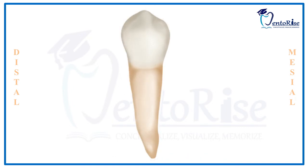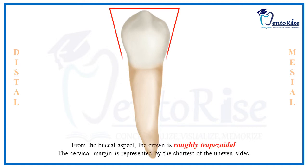The shape of the crown from the buccal aspect is roughly trapezoidal, with the shortest side of the trapezium lying at the cervical line.